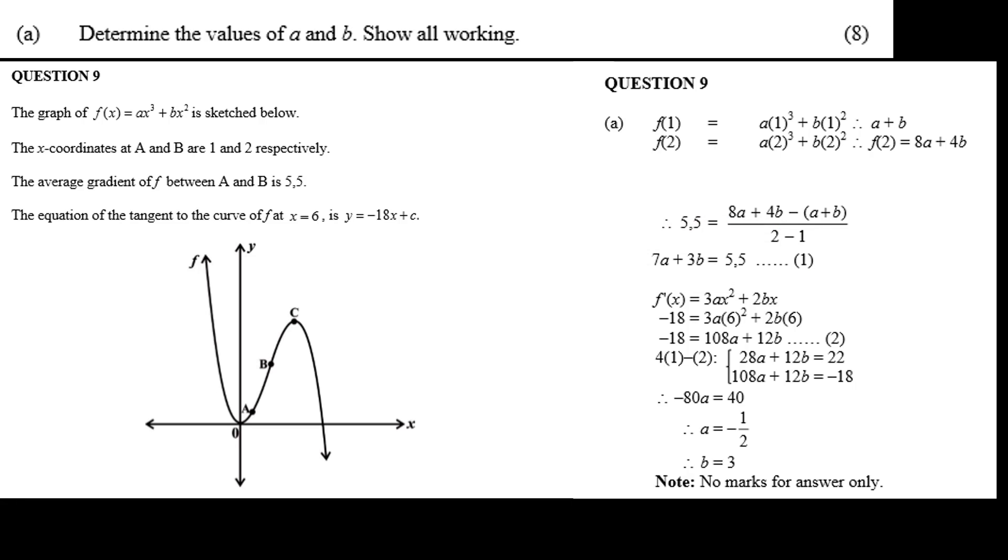Now from what we know about the derivative, the derivative of f equals 3ax squared plus 2bx. We now know that at x equals 6, that derivative of f equals minus 18.